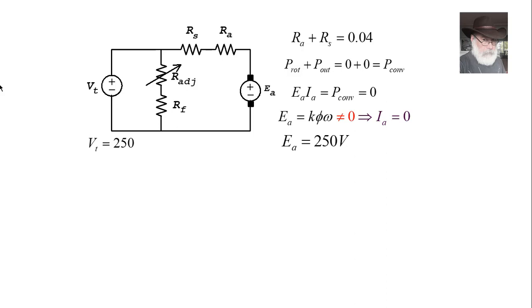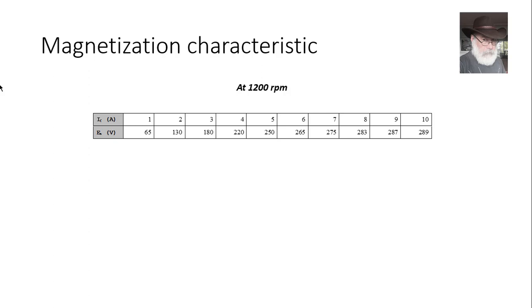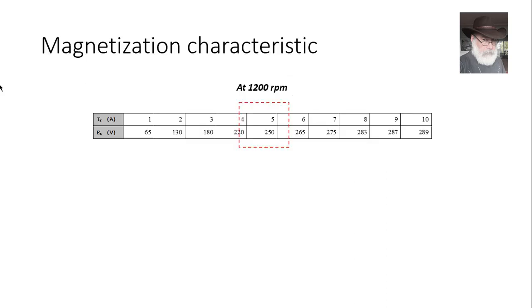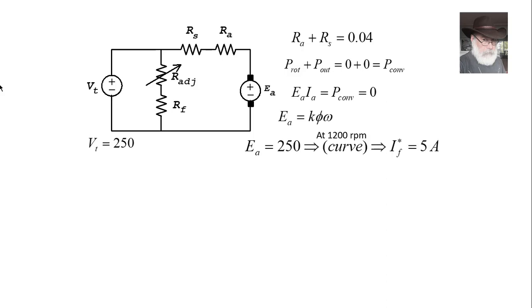With Ia = 0, there is no voltage drop across the 0.04-ohm resistance, so Ea = V_T = 250 volts. From the magnetization curve at 1200 RPM and Ea = 250 V, the equivalent field current must be 5 amperes. Since the series coil current equals Ia = 0, and armature reaction is neglected, the actual field current IF is 5 amperes. The total resistance in the field branch is 250/5 = 50 ohms; subtracting the field coil resistance gives the adjustable resistor value.